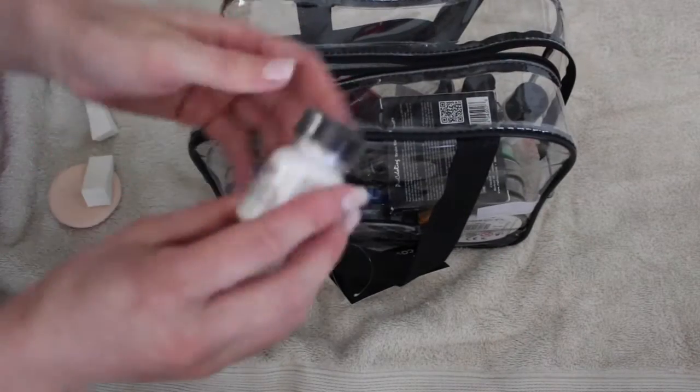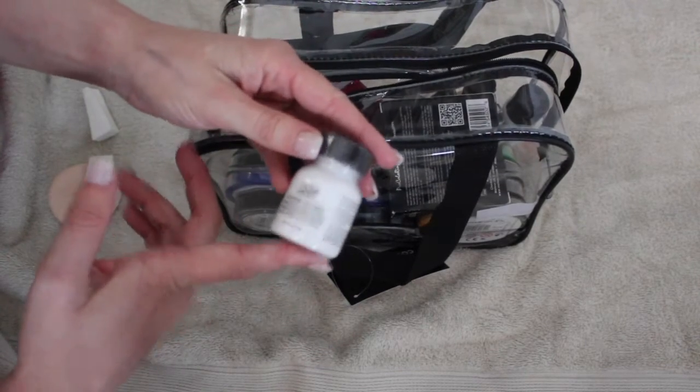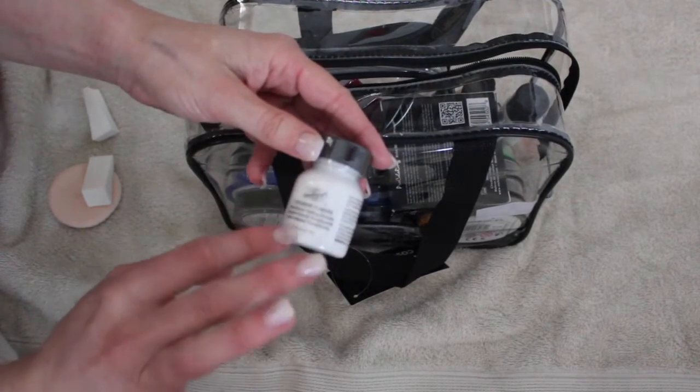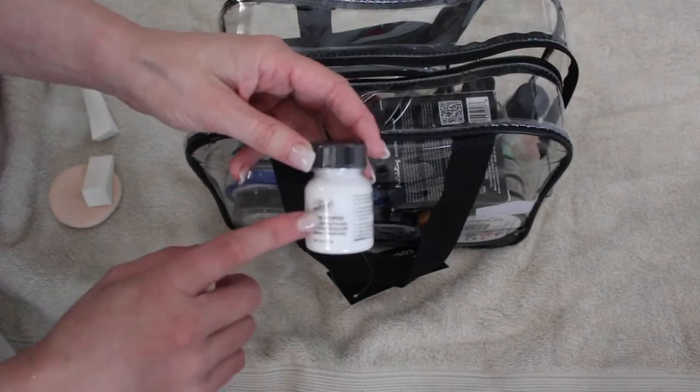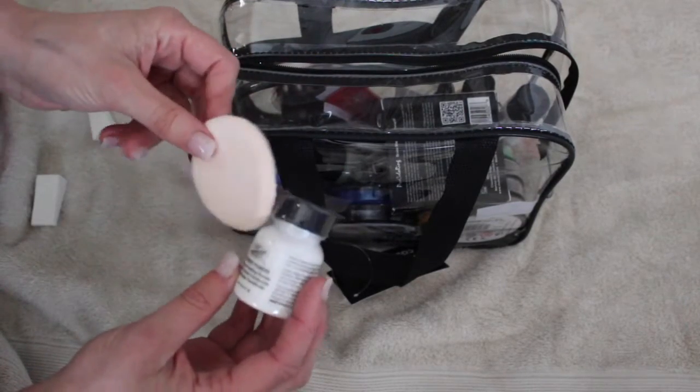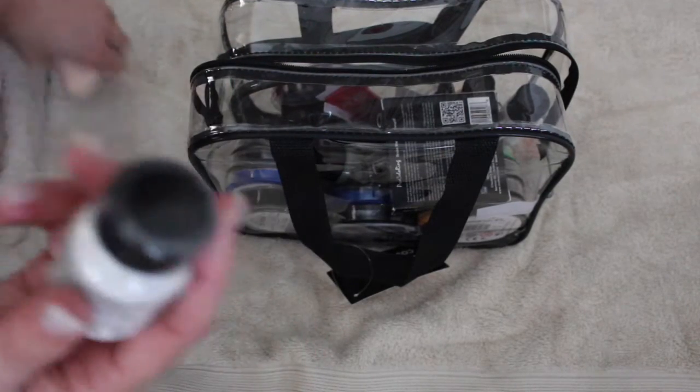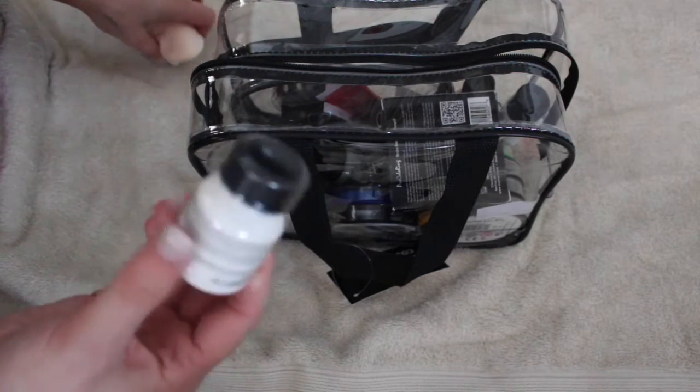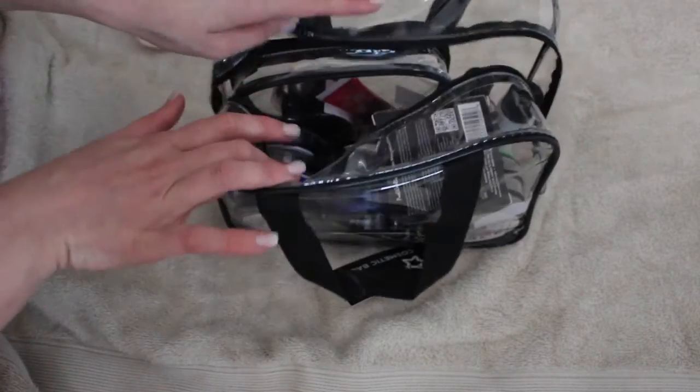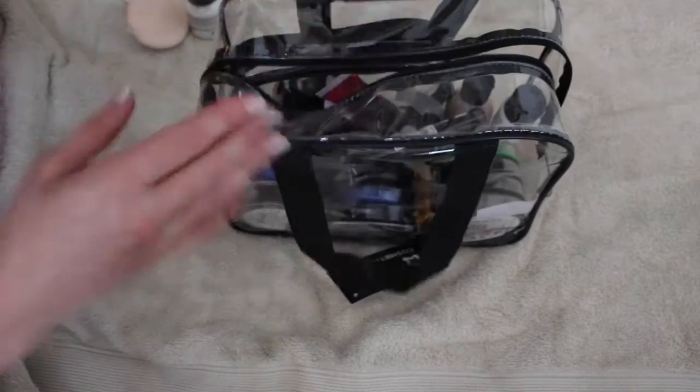Then I have a Mehron color set powder. This is a translucent powder by Mehron. It's specifically designed for fixing cream makeup and face paints. It's really good for that, and that's what I use this little one with. It looks like glitter dust, but it's just a translucent powder.